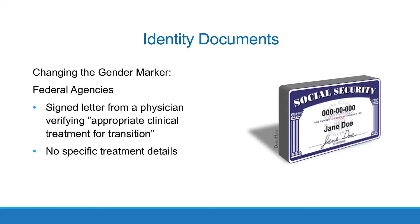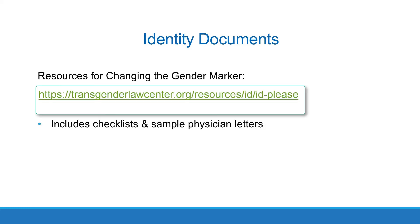To change the gender marker with federal agencies — including passports, the Social Security Administration, and U.S. Customs and Immigration — transgender people are required to submit a signed letter from a physician stating that they have administered appropriate clinical treatment for transition to the new gender. It is not necessary to include specific treatment details. A step-by-step guide to changing federal ID, including checklists and sample physician letters, is available from Transgender Law Center at transgenderlawcenter.org/resources/id/id-please.